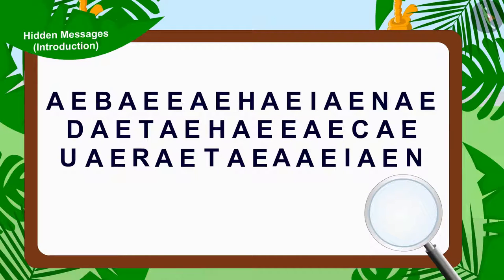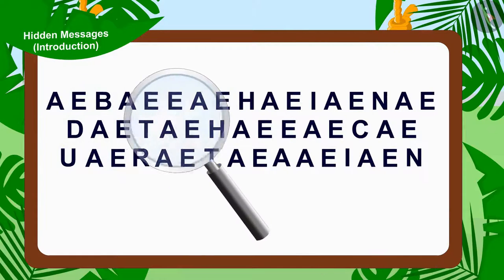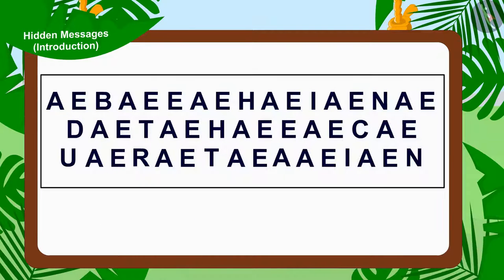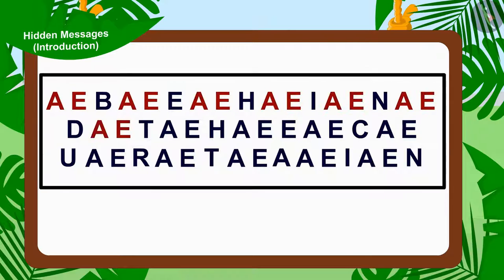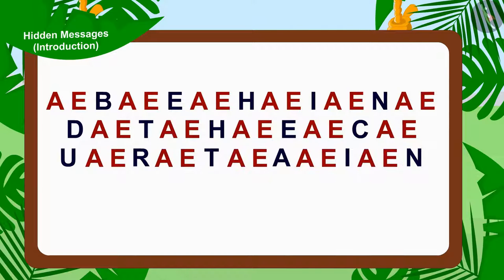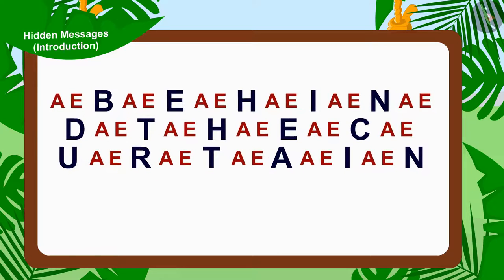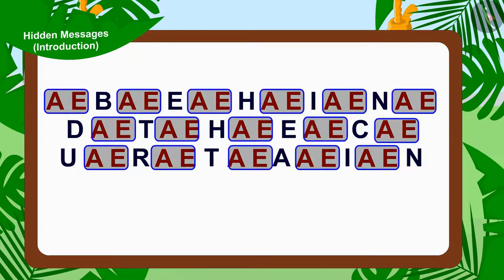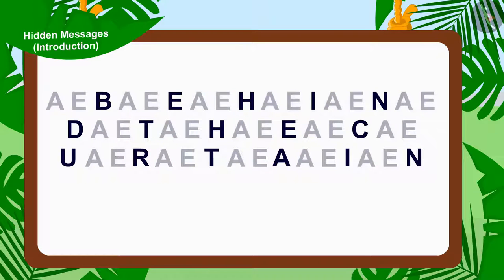Let's see Appu's first letter carefully. Children, can you see some form of repetition here? The alphabets A and E are being repeated every time. And in every repetition, a new alphabet is getting added after A, E. If we only write the alphabets coming after A, E, excluding the alphabets A and E, we will find this written.